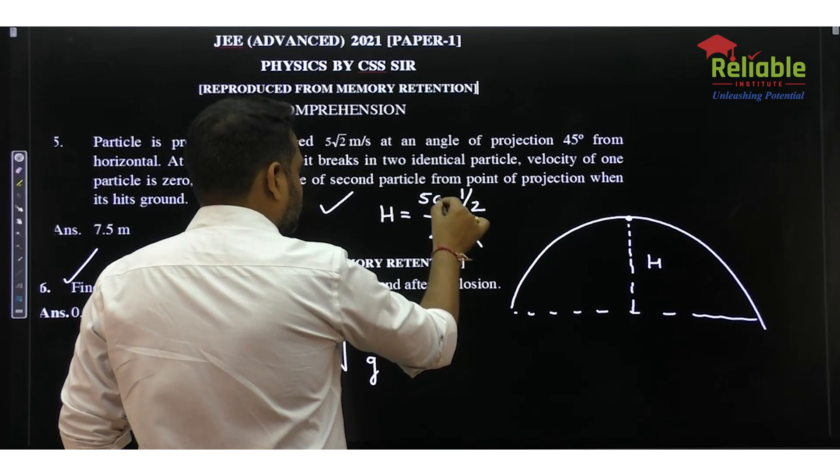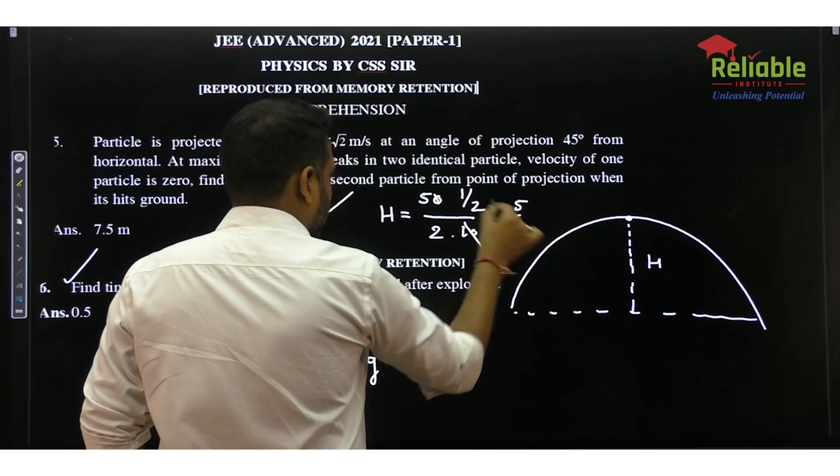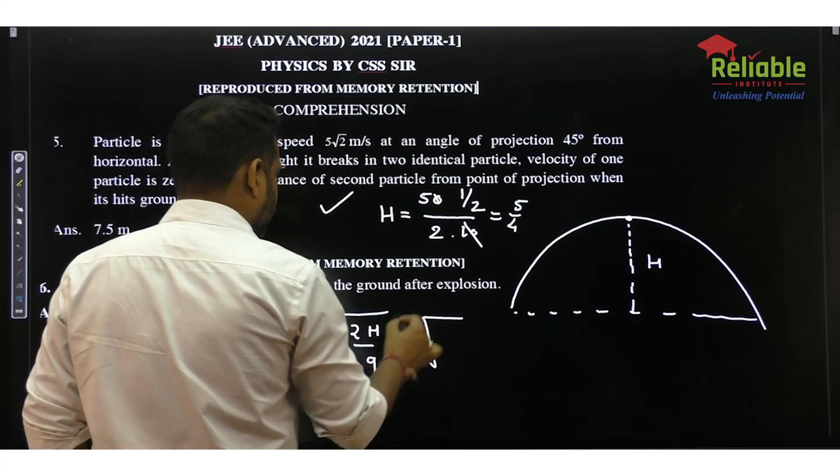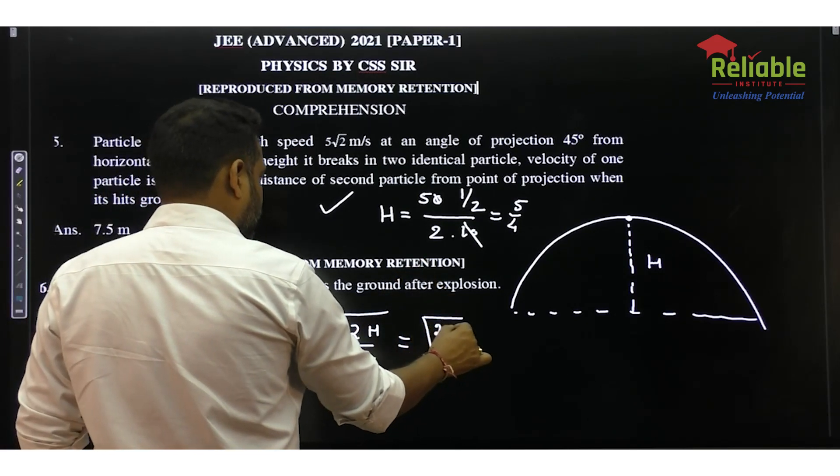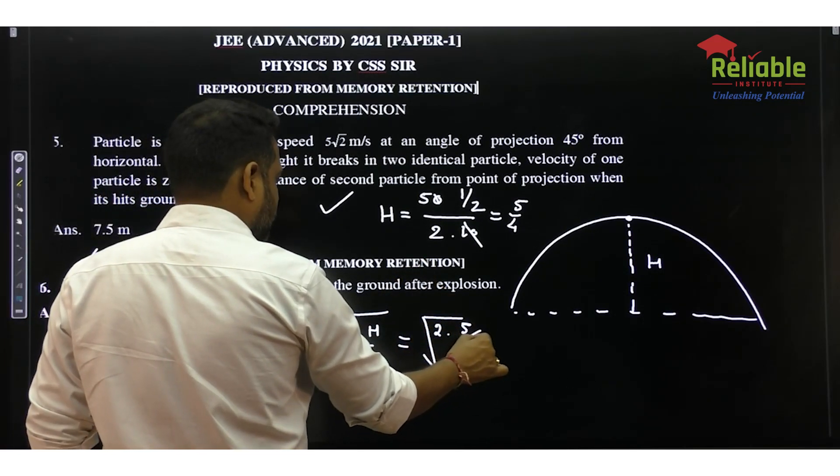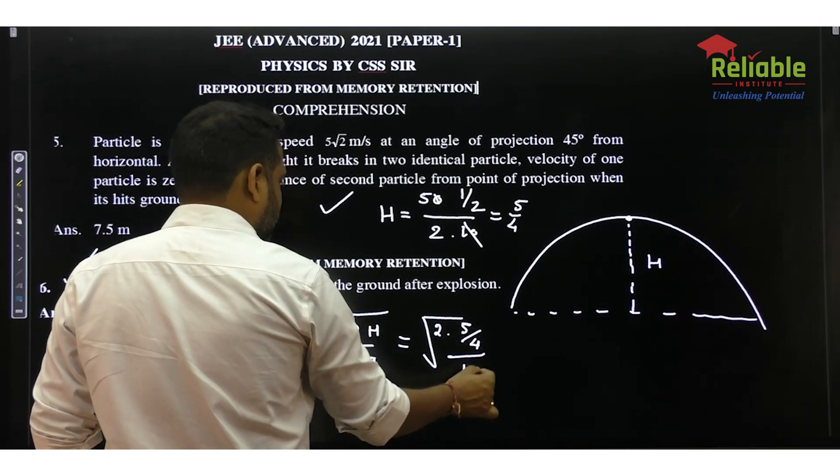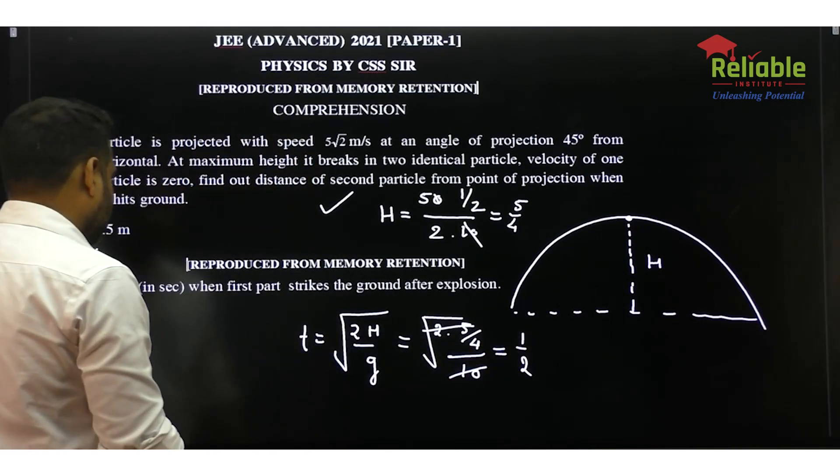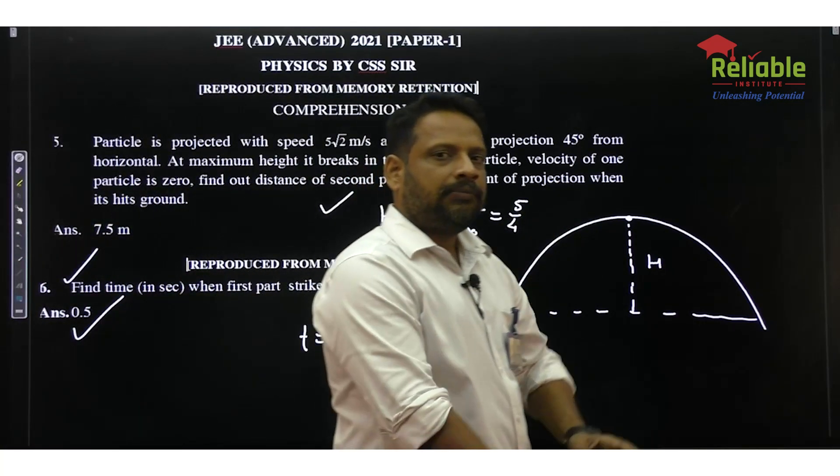Let's see how much it is. 10 from 10, this is 5 divided by 4. So maximum height is 5 divided by 4. So this is under root 5, 2 into 5 divided by 4 into 10. 10 from 10. The answer is 1 upon 2, which is 0.5 seconds. It means that this part will fall to the ground.